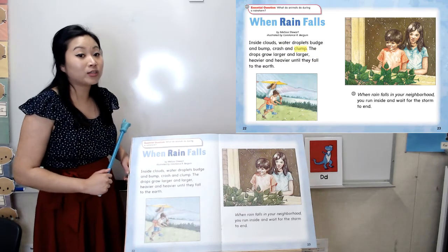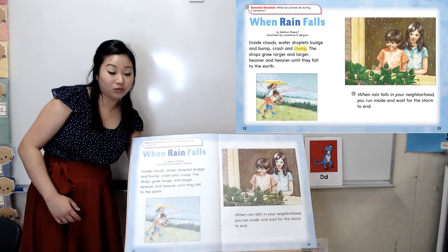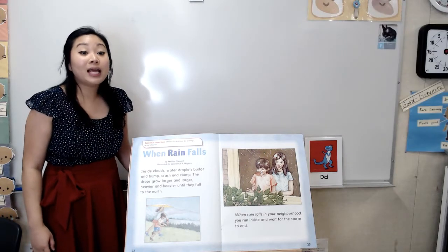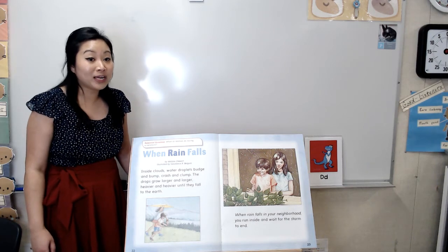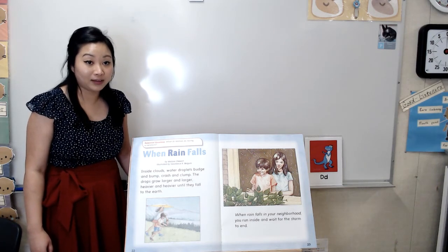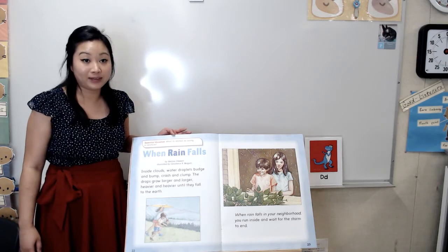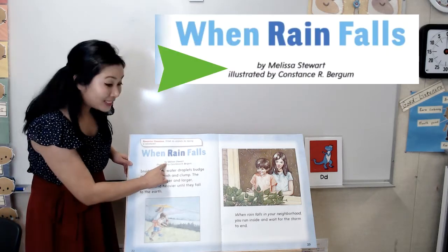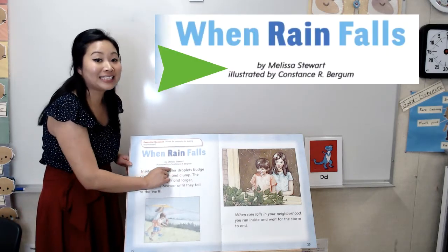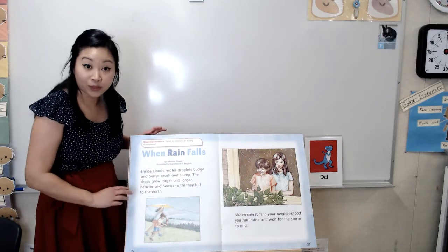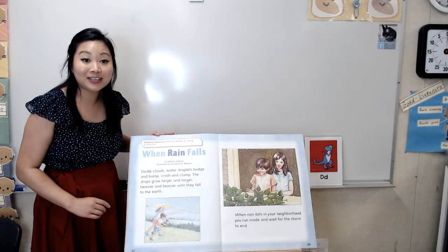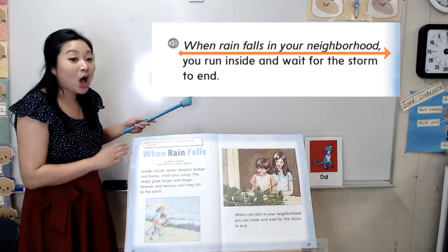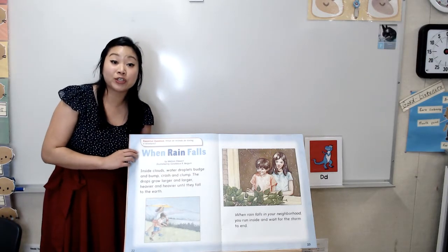Remember, the author writes the words and the illustrator draws the pictures in the story, and the pictures that they draw are connected to the words on the page. Before we start, let's talk a little bit about the different types of print that authors use to organize their writing. Print is just what the font looks like. A slanted print is called italics. This is an example of italics. Do you see any other words that are in italics on this page? I see some right here.